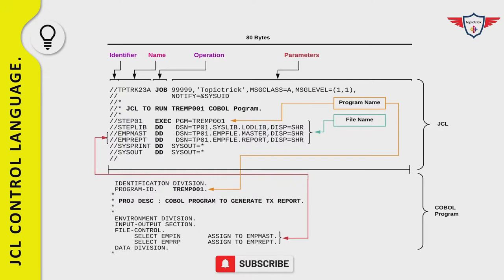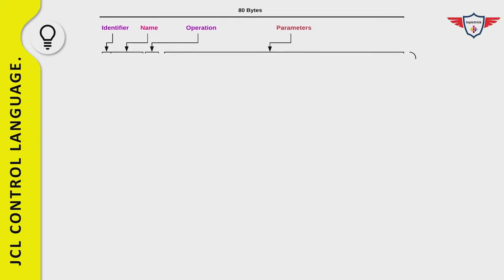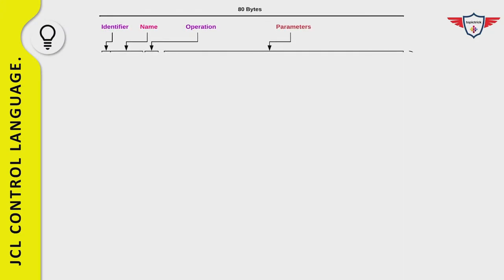Before discussing job control statements in detail, let's cover two important topics: the coding rules for writing JCL, and JCL parameters including keyword and positional parameters. These are very important because they are what define your control statements.